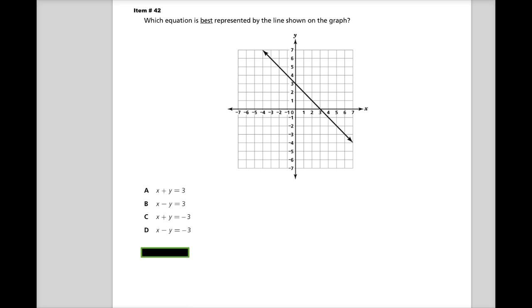They have X and Y on the same side. So it's probably easier to do that than to convert all these into slope-intercept form and then graph them and see which one matches. Although that's an option too.